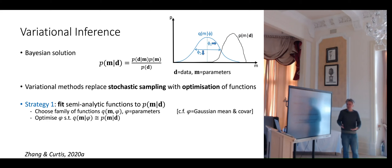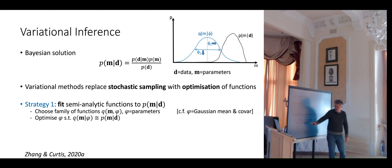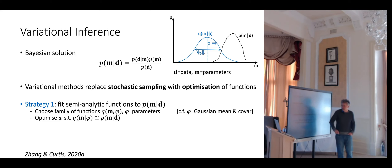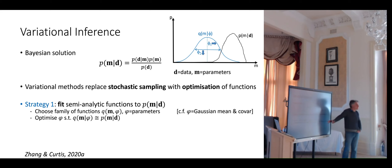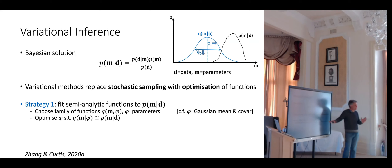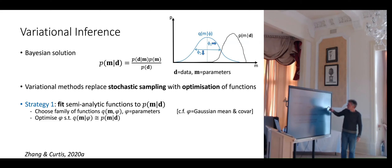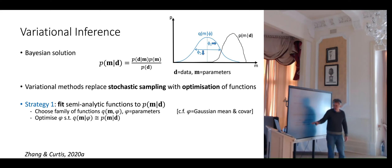The general schema is to choose a family of functions Q that we're going to fit to the posterior distribution. Q has parameters phi and is a probability distribution over the model parameters. One simple example is the family of all Gaussians, which are parameterized by the mean and standard deviation in 1D, or the covariance matrix in multiple dimensions. We then try to find the member of that family which is the closest approximation to the posterior distribution.